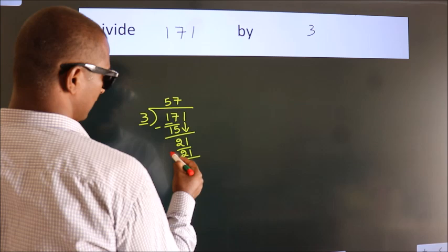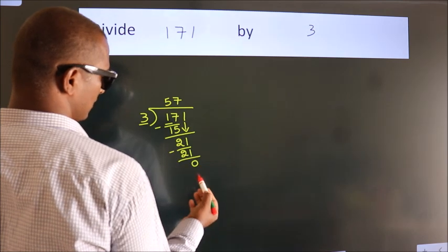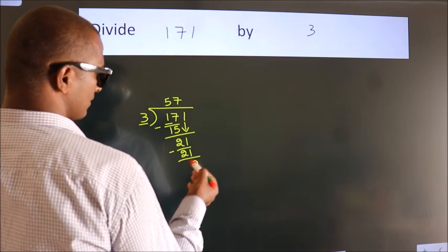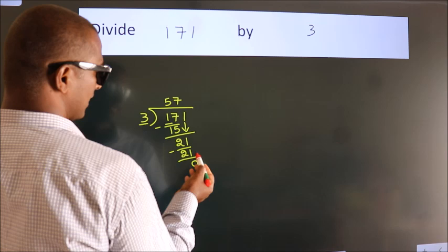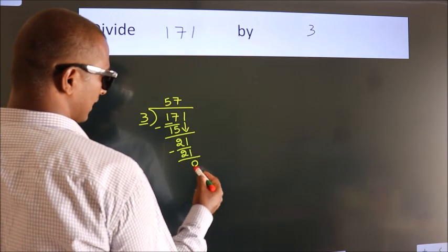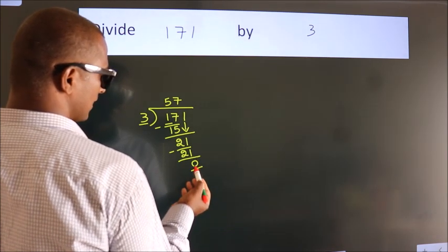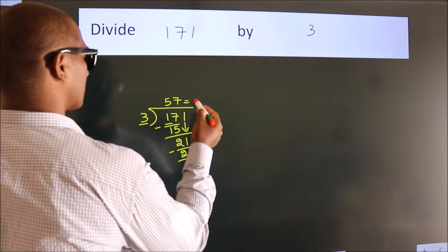Now we subtract. We get 0. After this, no more numbers to bring it down. And we got remainder 0. So this is our quotient.